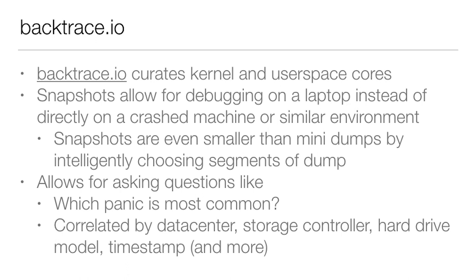Backtrace.io is a tool for curating kernel and user-space cores. It takes a core dump and creates a snapshot, which allows debugging on a laptop or external machine instead of directly on the crashed machine. Snapshots are even smaller than mini-dumps by intelligently choosing relevant segments. It allows asking questions like: which panic is most common in my data center? You can correlate by data center, storage controller, hard drive model, and timestamp to figure out where and when crashes happen and what hardware may be causing them.